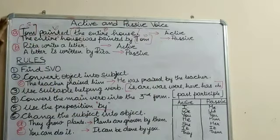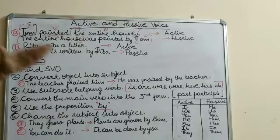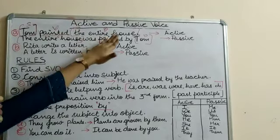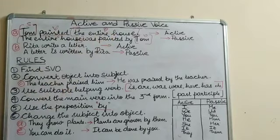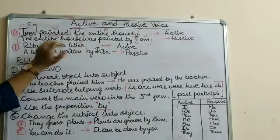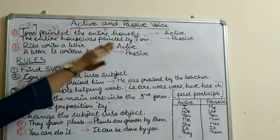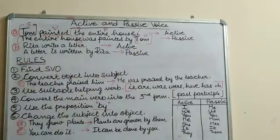In the active voice, we have the performer of the action as the subject and the receiver of the action as the object. But in the passive voice, we have the receiver of the action as the subject and the performer of the action becomes the object.